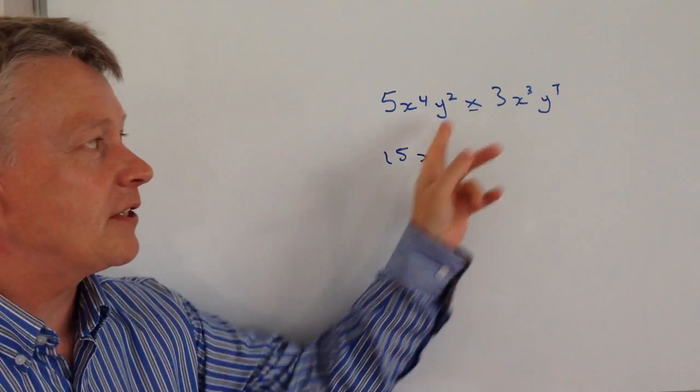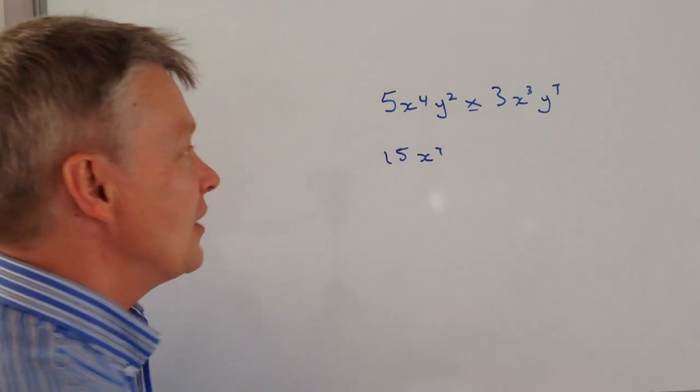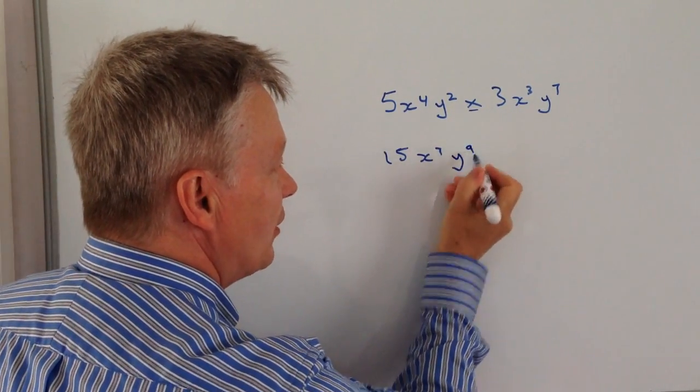And then finally we've got y to the two times y to the seven, so that's going to be y to the nine.